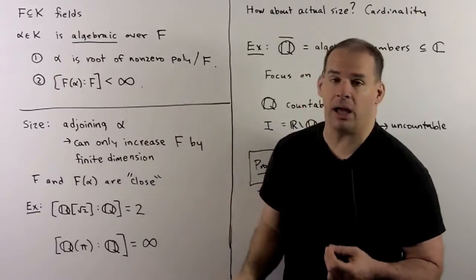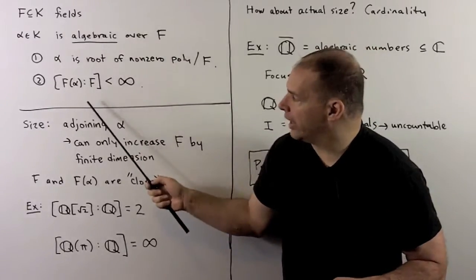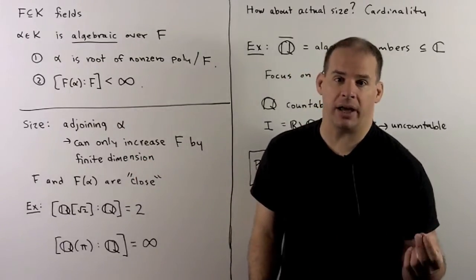First, alpha is the root of some non-zero polynomial with coefficients in f. Or, the degree of the subfield generated by f and alpha over f is finite.